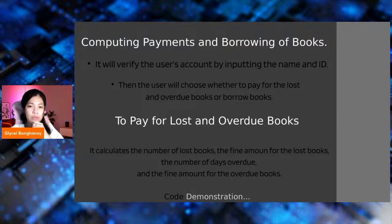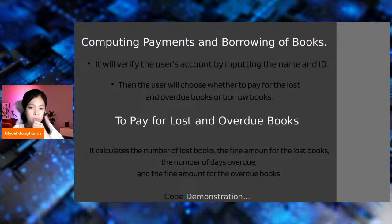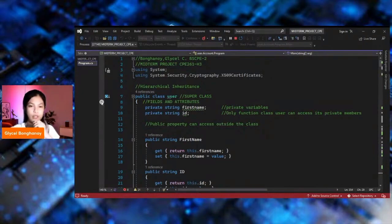The user will then choose whether to pay for the lost and overdue books or borrow books. To pay for lost and overdue books, it calculates the number of lost books and the fine amount for lost books, the number of days overdue, and the fine amount for the overdue books.